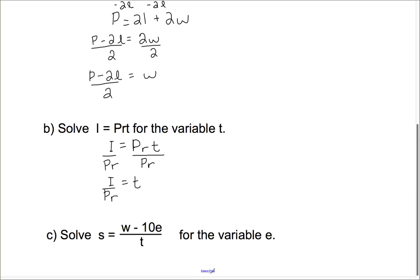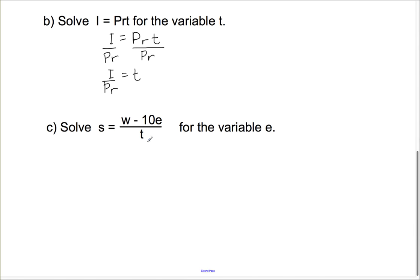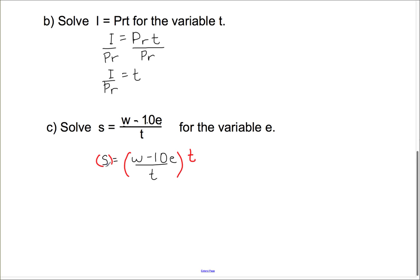Next formula: S equals W minus 10E over T. This is actually the formula for finding your typing speed — the number of words you type minus 10 times the number of errors, divided by the time it takes. So if we want to solve for E, this one's a little bit trickier because we've already got that division in there. The first thing I want to do is get the T off of this side by multiplying by T, because it's dividing that side. If I multiply by T on that side, I need to multiply by T on this side as well.